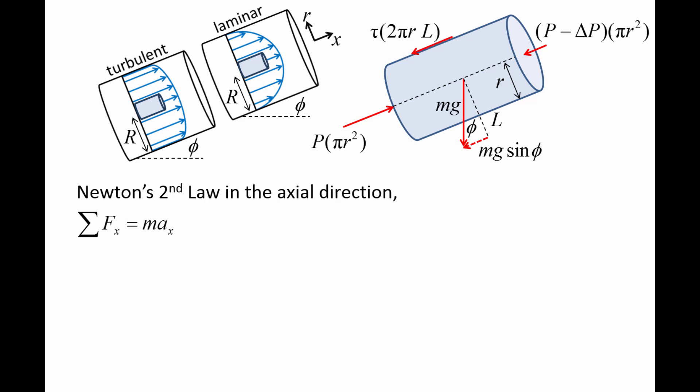Newton's second law in the axial direction states that the sum of external forces acting on the cylinder in the axial direction is equal to the cylinder mass m times the acceleration in the axial direction Ax. Since we have fully developed flow, the cylinder's velocity does not change in time and Ax is zero. The sum of the forces becomes p times pi r squared minus the quantity p minus delta p times pi r squared minus tau 2 pi r L minus mg sine phi. Solving for delta p, we see that the pressure drop is related to the shear stress and orientation angle.